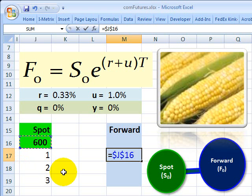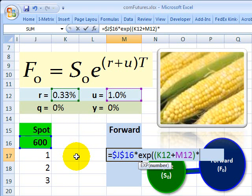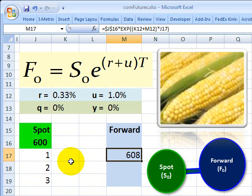That's my spot price. I'm going to multiply by the exponential function now. That's Excel's exponential function. Here's the E. Multiply that by the sum of my interest rate plus my storage cost. Close parens. And I want to multiply that by the number of months that I'm predicting forward. And then I'm going to close parens and I get the theoretically estimated forward price of $6.08.